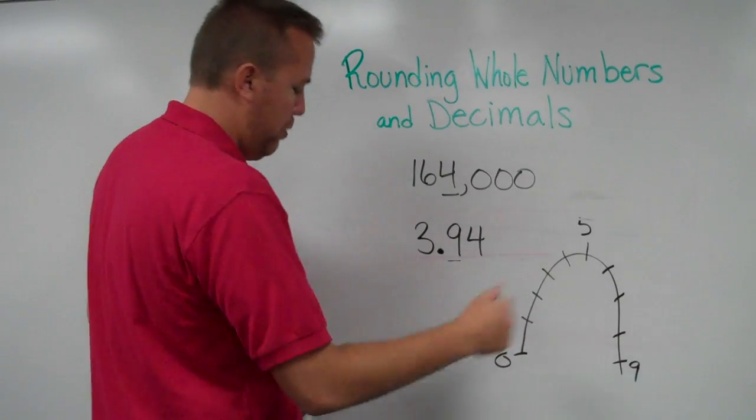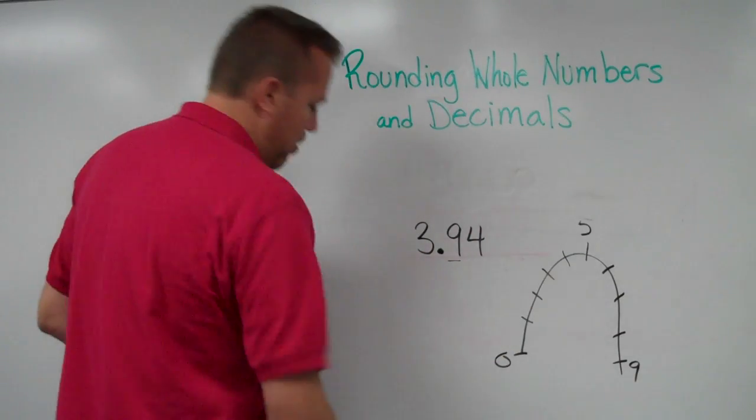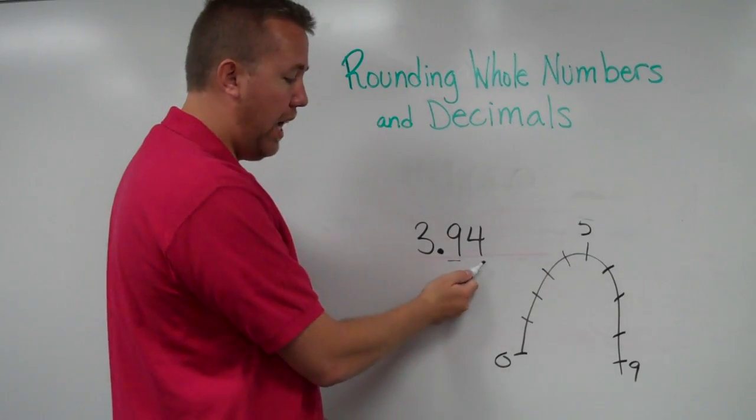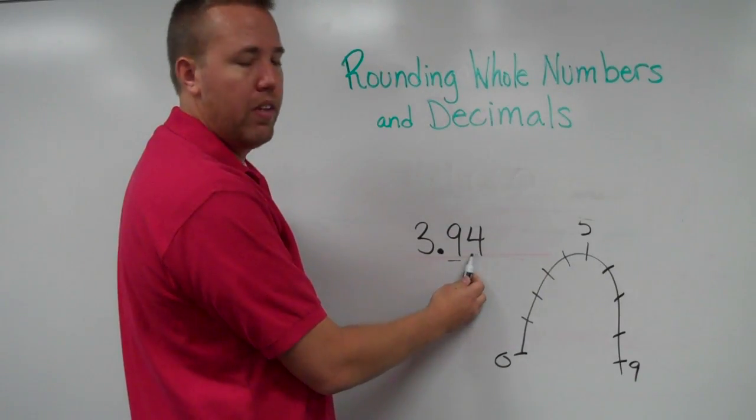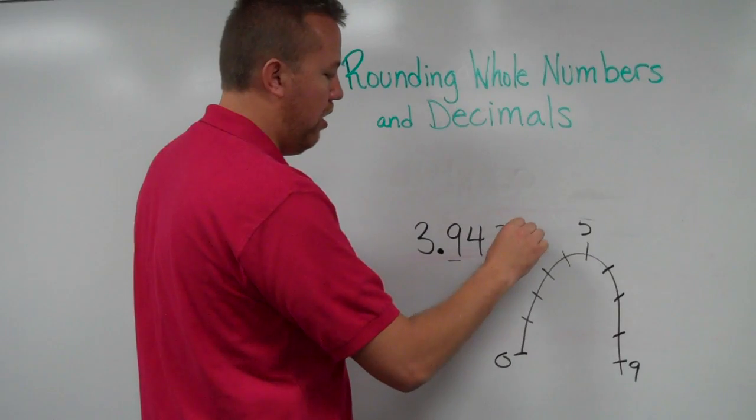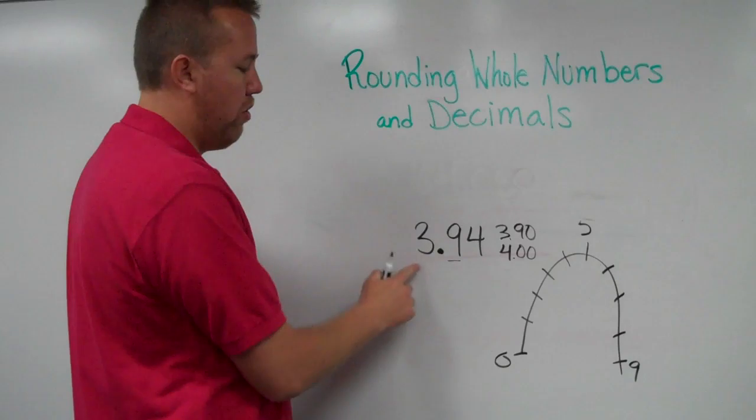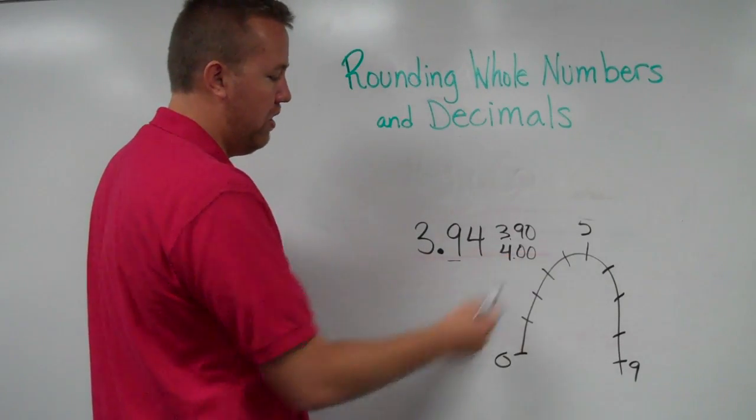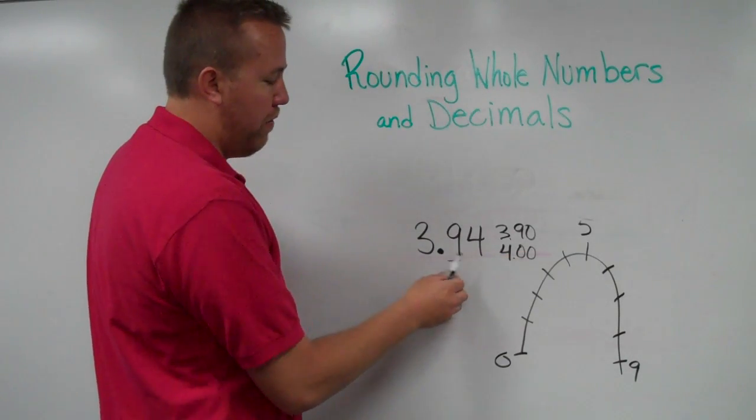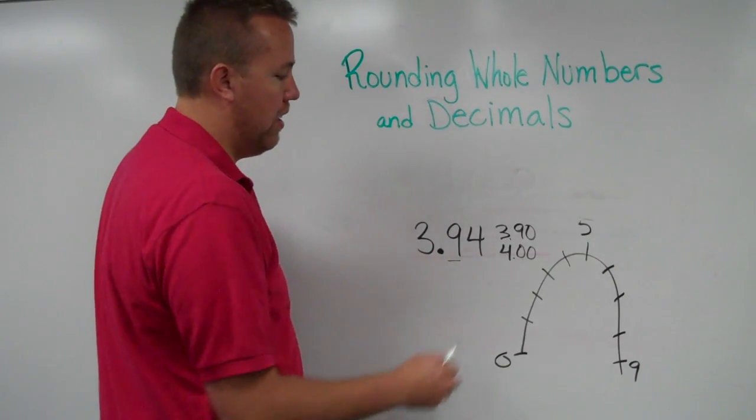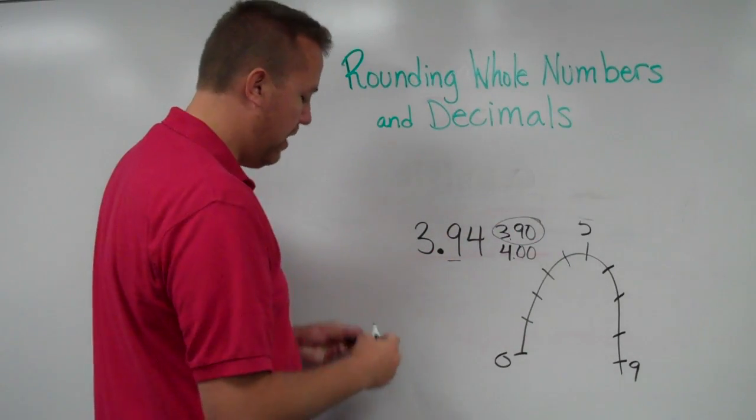So, now, as we round to the nearest tenth, we still just look to the right. Is this digit higher or lower than five? And we have these two choices, because in tenths, 3.90, 4.00. Because that is a four, we round down back to 3.90. So, that would be our choice there.